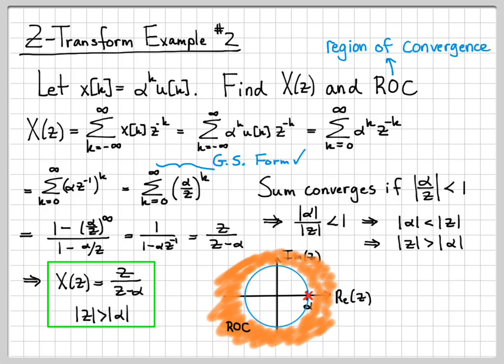This right here, that point alpha, that's what we would call a pole of X of Z if indeed alpha was a real valued alpha.